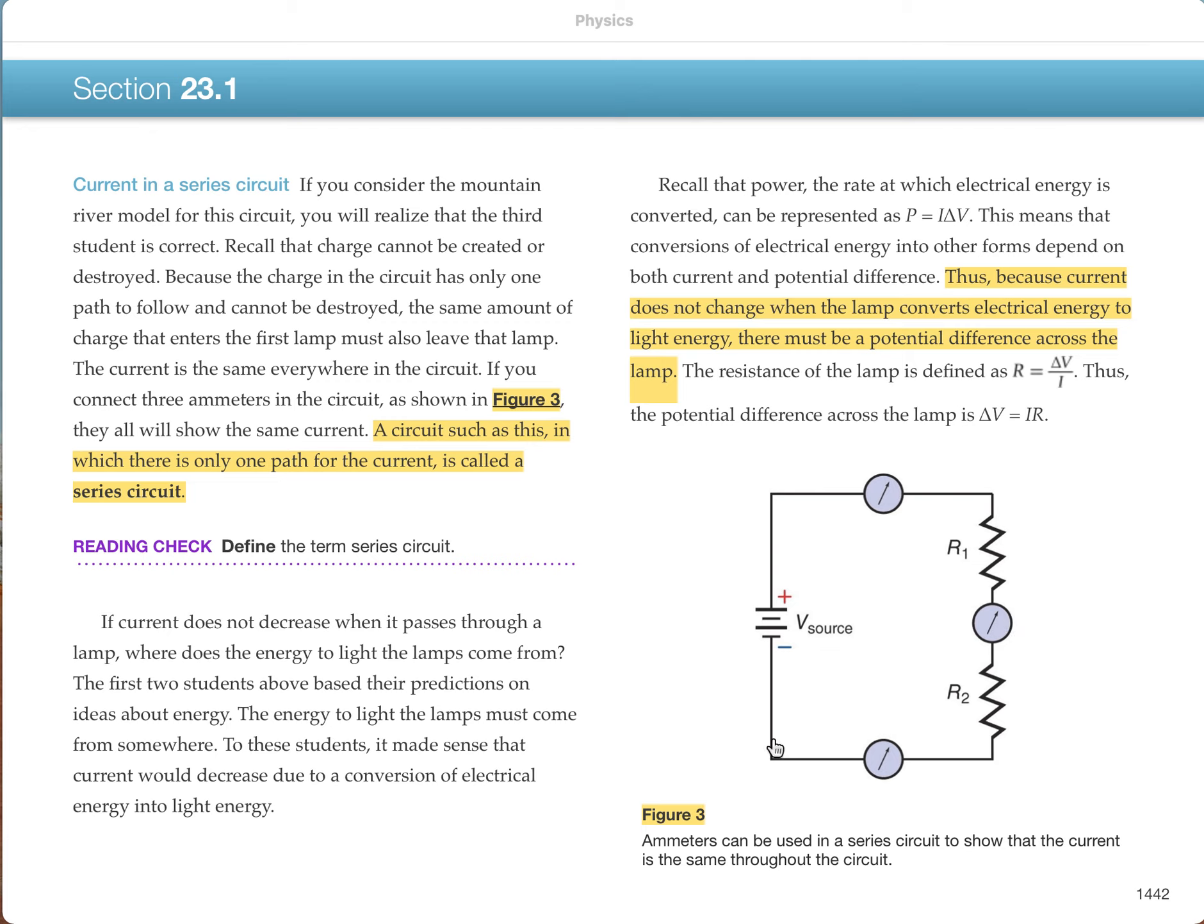For example, if you have a 10-volt battery, and these two resistors were equal, you'd come down 5 volts through each one of the resistors.